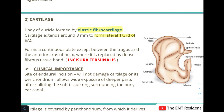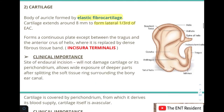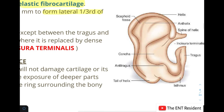The cartilage is continuous throughout except in the region between the tragus and the anterior crus of the helix, where it is replaced by a dense fibrous tissue band known as the incisura terminalis. This is the spine of the helix and the tragus region — between these two the cartilage gets replaced by fibrous tissue.